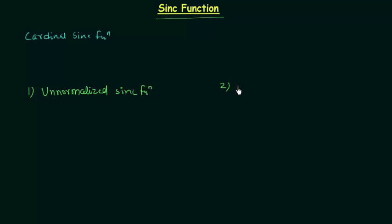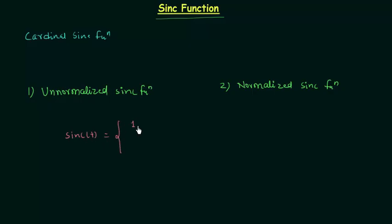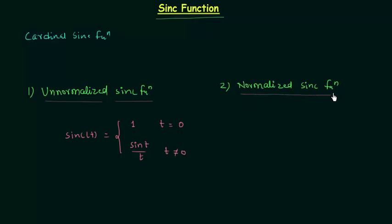The second one is the normalized sinc function. In mathematics we use the unnormalized sinc function. The unnormalized sinc function is defined as: sinc(t) = 1 when t = 0, and sinc(t) = sin(t) / t when t ≠ 0.